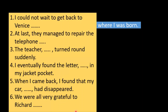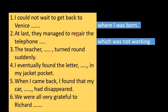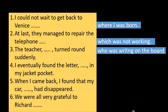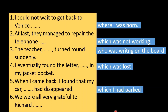Which was not working — because the keyword here is 'repair, managed' past tense. Number three: The teacher turned around suddenly — the teacher is a person, so: the teacher who was writing on the board. Number four: I eventually found the letter — the letter is an object — which was lost in my jacket pocket. Number five: When I came back I found that my car had disappeared — car is an object, and since you must have parked it, you can say 'which had been parked.' Number six: We were all very grateful to Richard — the person who had helped us.